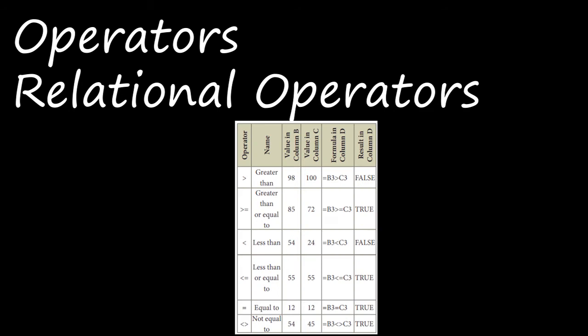The first operator is greater than, and if an equal to comes along with it, we say it is greater than or equal to. In the formula bar: equal to B3 greater than C3 means 98 is greater than 100 - 98 is not greater than 100, so the result will be false. Next is less than or equal to - if 55 is given and it is equal also, the value will be true.